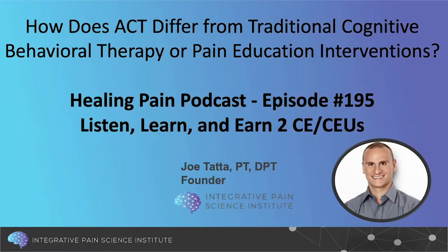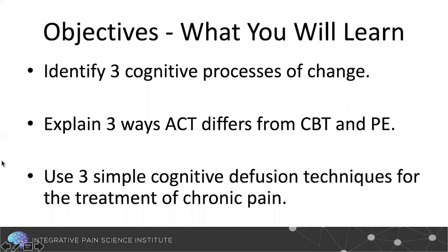Today I'm also doing something brand new and exciting. This episode is going to be available for continuing education units. You can listen to this for free, but you can also earn continuing education units. The learning objectives are: identify three cognitive processes of change related to pain, explain three ways that ACT differs from cognitive behavioral therapy or pain education, and learn how to use three simple cognitive diffusion techniques for the treatment of chronic pain.